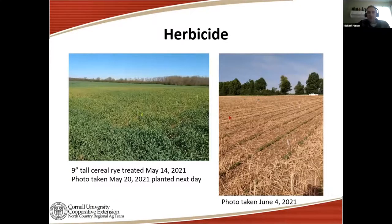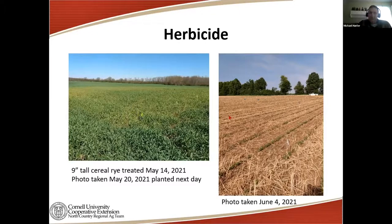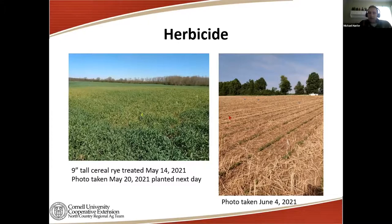Herbicide is probably our more common way of terminating cover crops — using a burndown herbicide, with multiple options available. These pictures show a trial here in the North Country in 2021, a resistant marestail soybean herbicide trial. On the left, nine-inch-tall cereal rye was treated with a glyphosate application on May 14th; the photo was taken May 20th, showing how quickly glyphosate started to act — you can see the yellowing block that was sprayed. The field was planted to soybeans the next day, seven days after application.